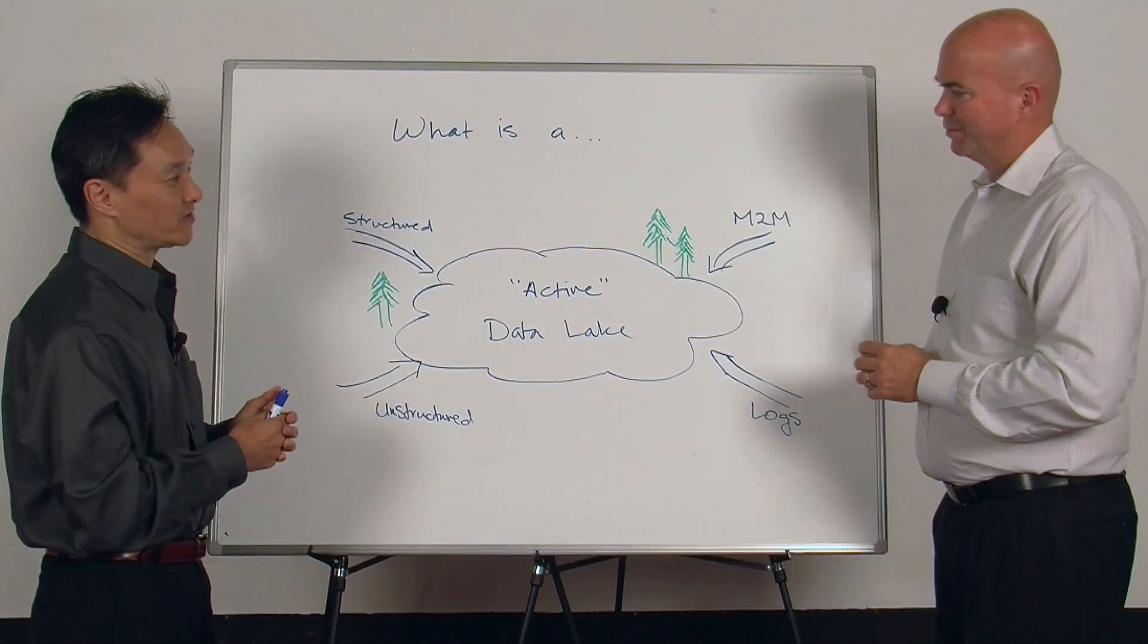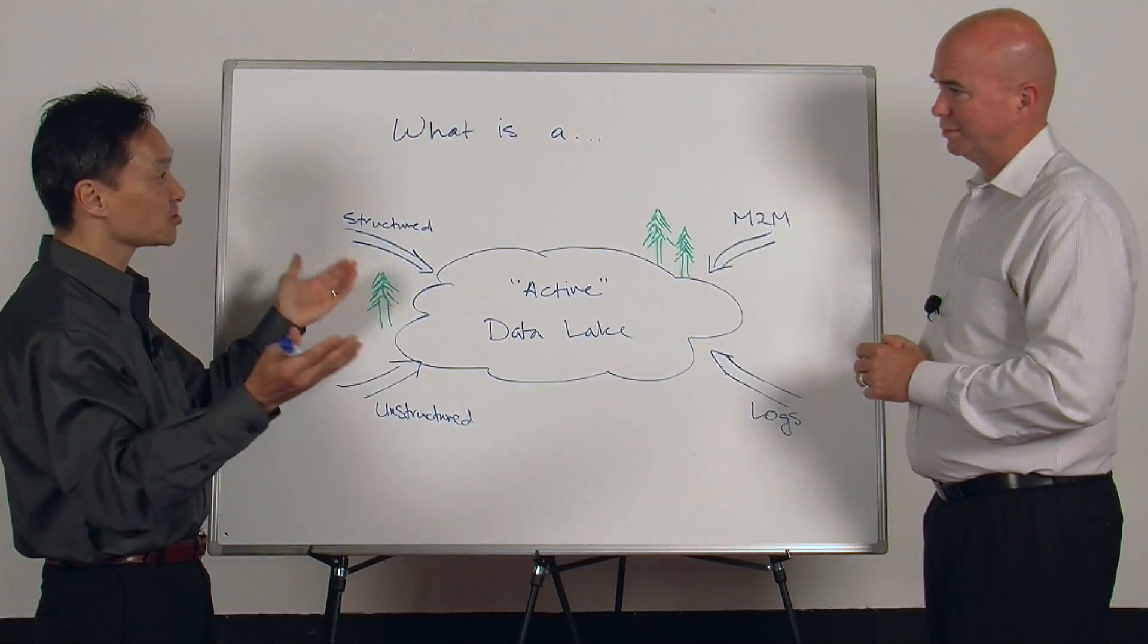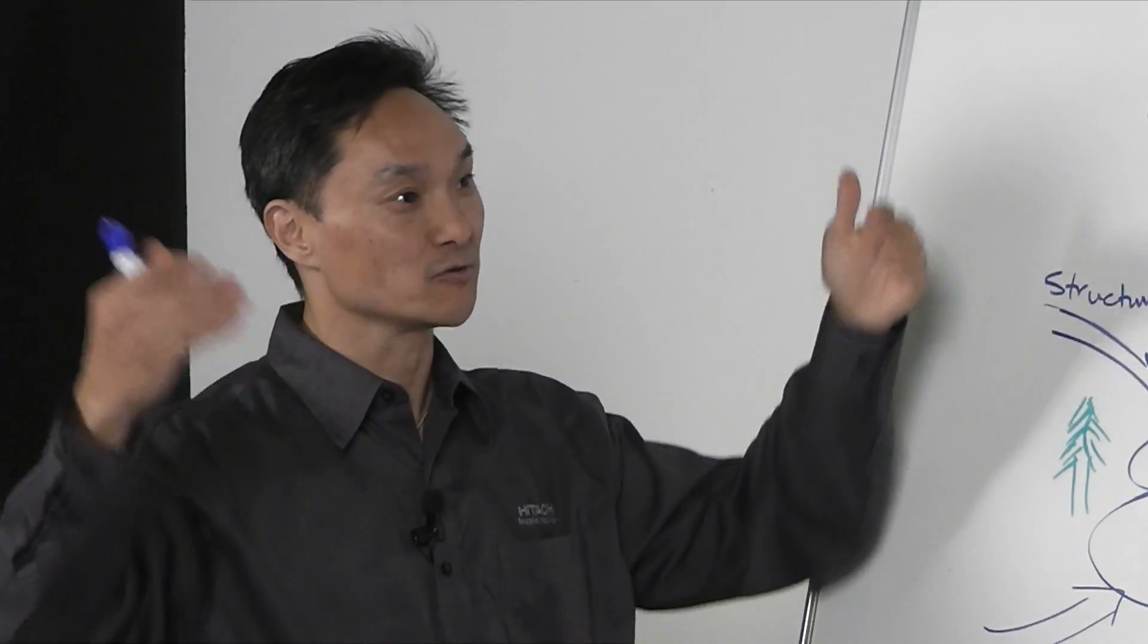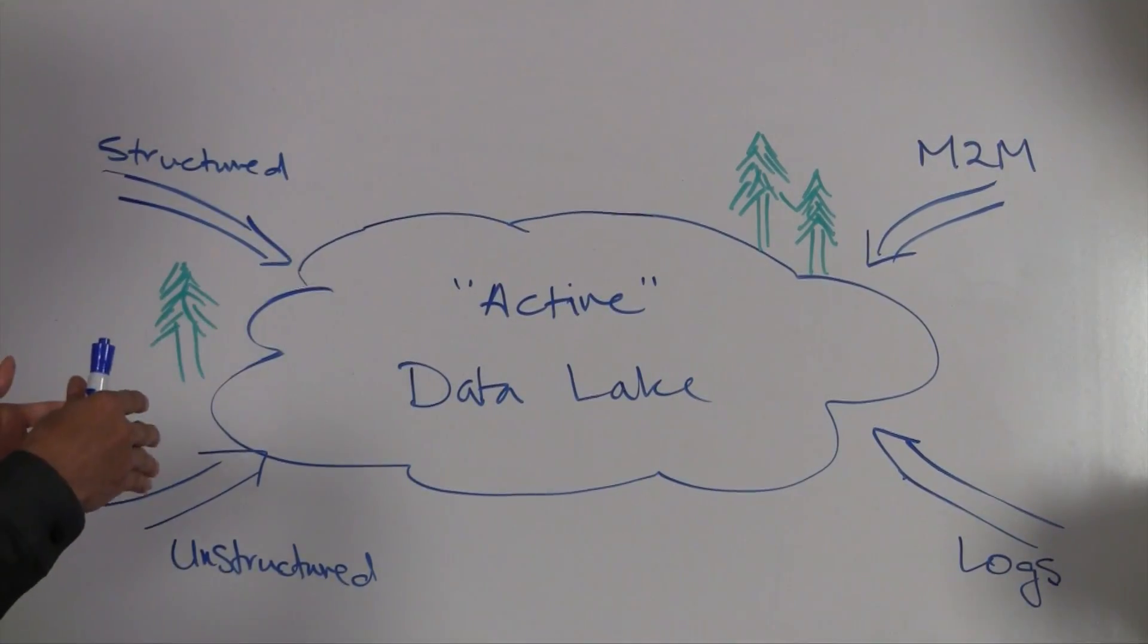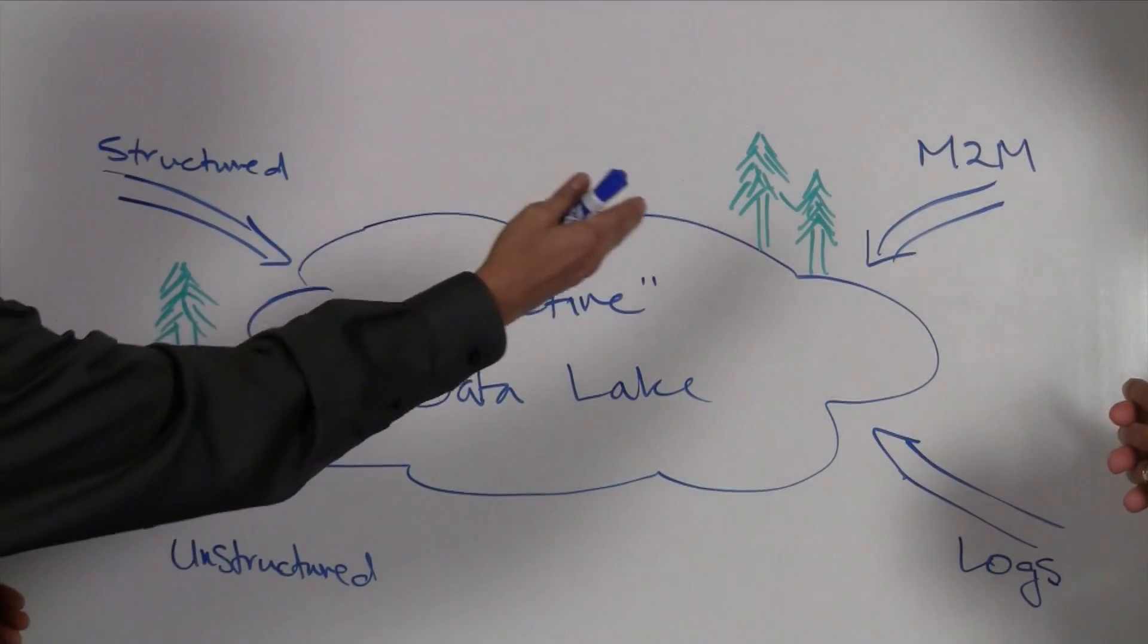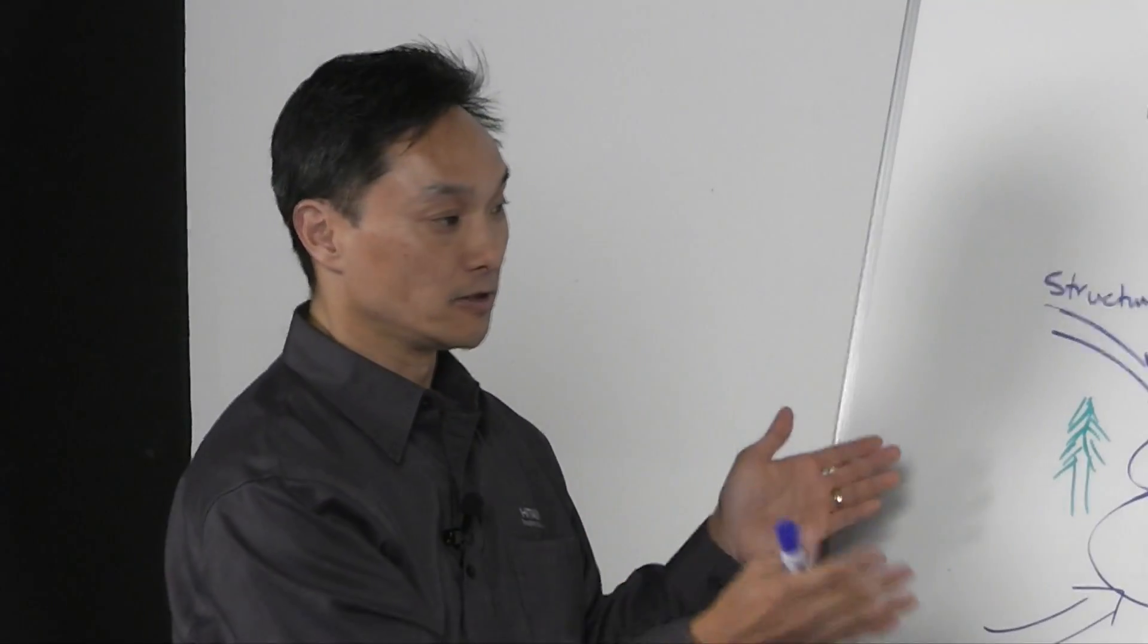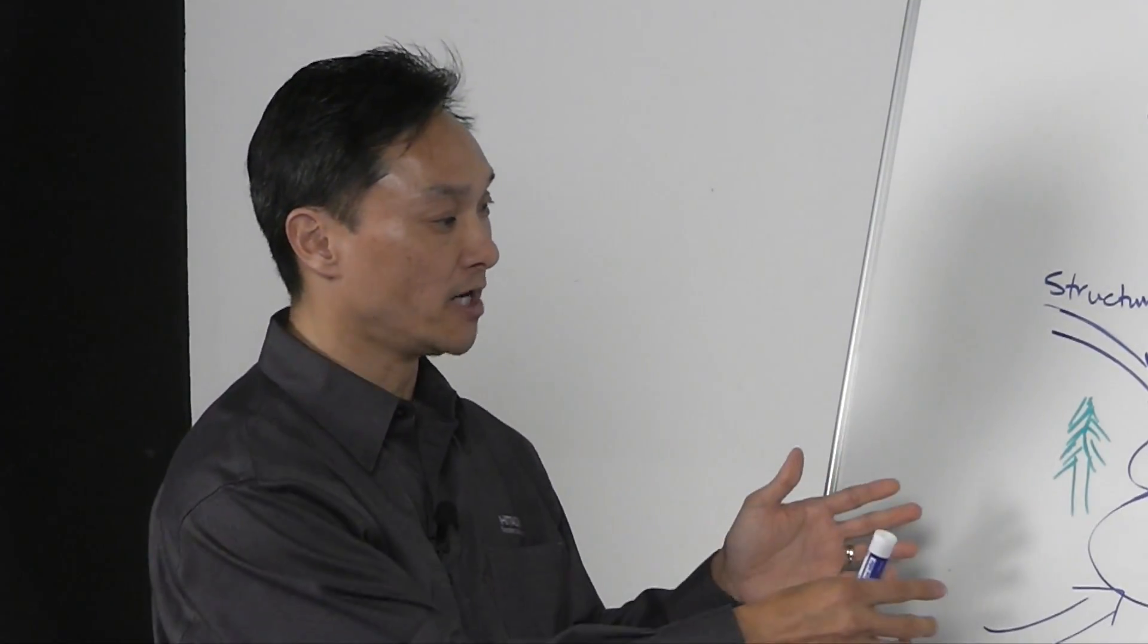Well, the easiest way to think of a data lake is to think of this large container that has, much like a real lake with rivers or tributaries coming into the river, you never know where the rivers are coming from or what's flowing through, right? So much like that, structured data, unstructured data, machine to machine, log files, real-time, and data at rest.